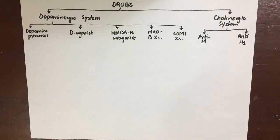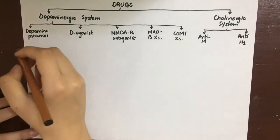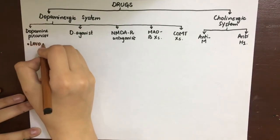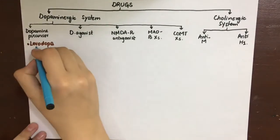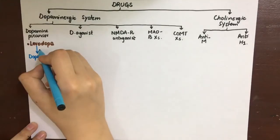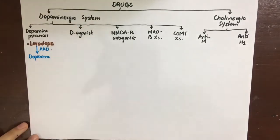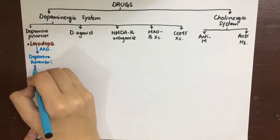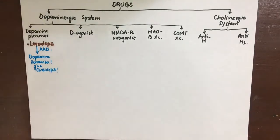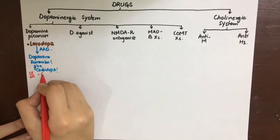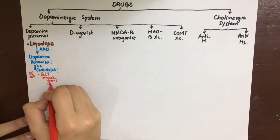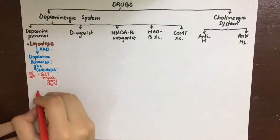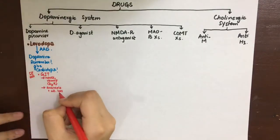The main dopamine precursor is levodopa. Since dopamine cannot cross the blood-brain barrier, we give levodopa, which is converted to dopamine by AAAD in the CNS. It must be given with carbidopa, a peripheral AAAD inhibitor. Adverse effects from increased peripheral dopamine include: chemoreceptor trigger zone stimulation via D2 receptors causing nausea and vomiting, and central effects causing anorexia and weight loss.